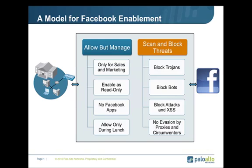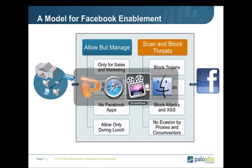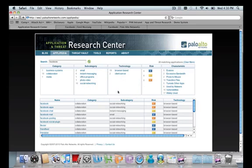You could also use a combination of these rules but give people free access during lunch hours. This gives us control over the rules and how we regulate access. We also need the ability to scan and block threats that come across on the traffic. No matter how much we regulate when and who can access this site, we still have the risk of Trojans, bots, and cross-site scripting attacks coming from Facebook. We need to look at this in real time — something Palo Alto Networks excels at — and do it without worrying about evasion techniques, circumventors, or proxies that people use to get around traditional network security equipment. These are all core parts of what we do within the Palo Alto Networks appliances.